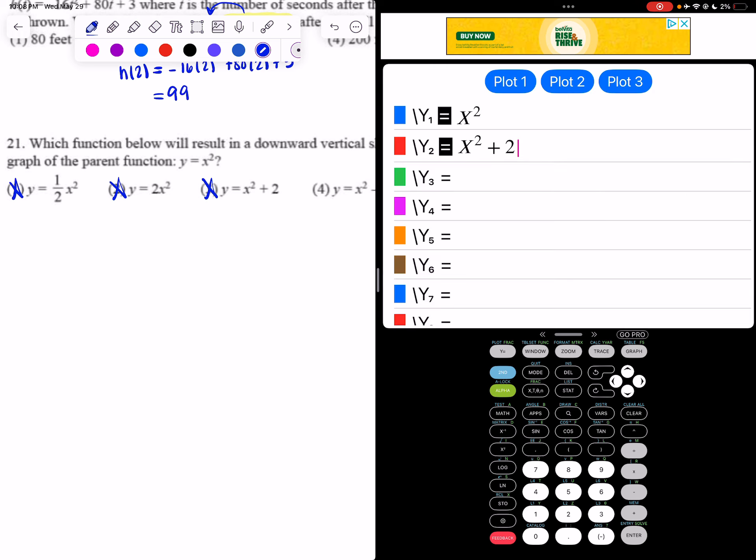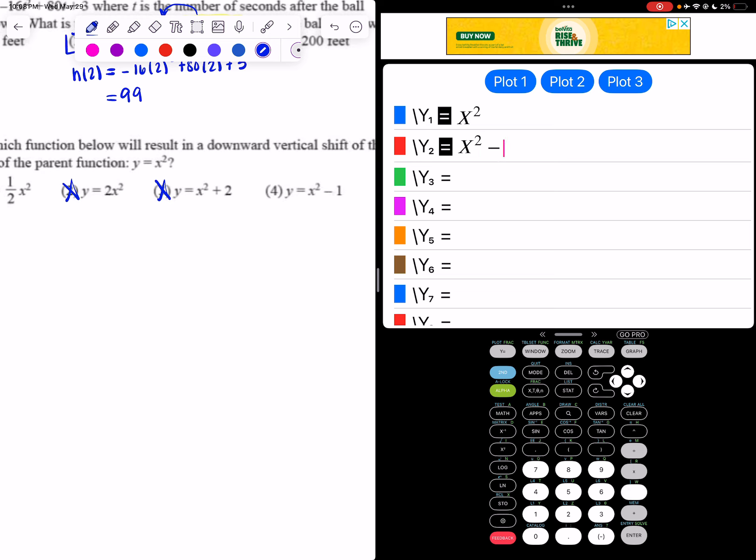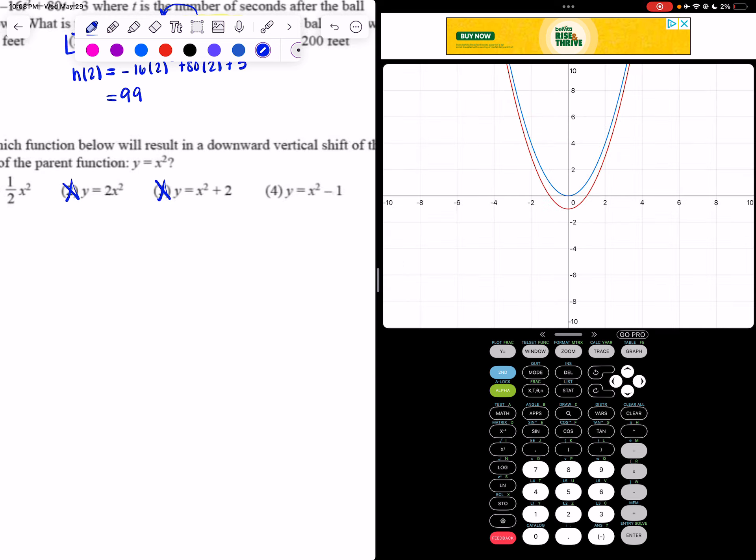And now if I look at choice 4, which is x squared minus 1, and hit graph, now the graph has been shifted down.